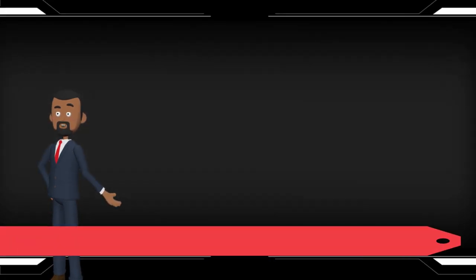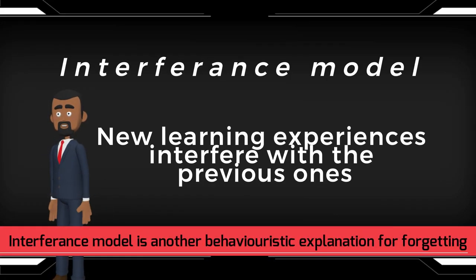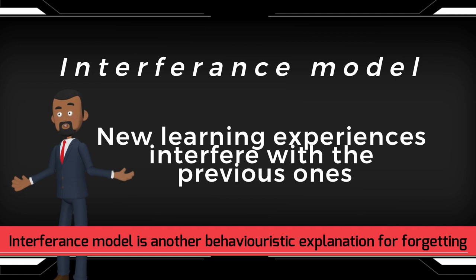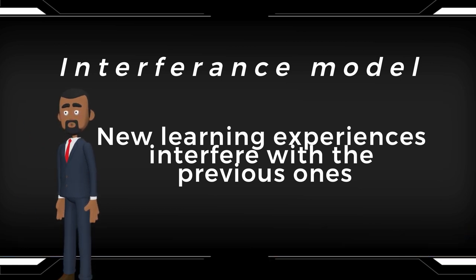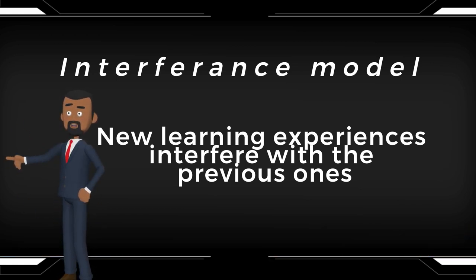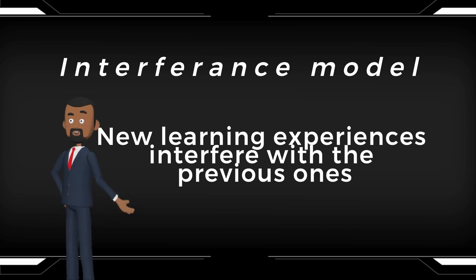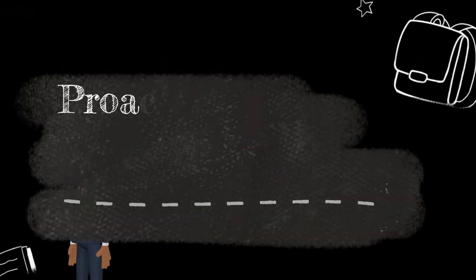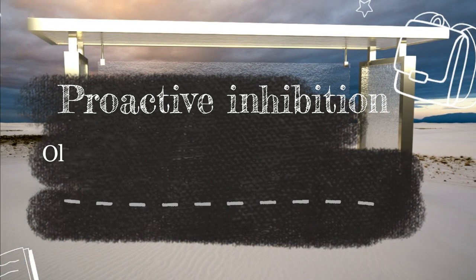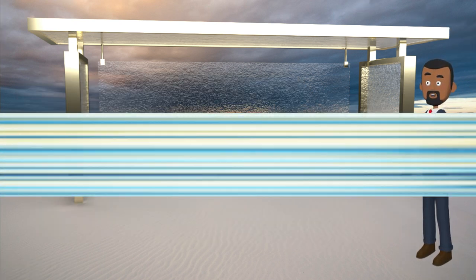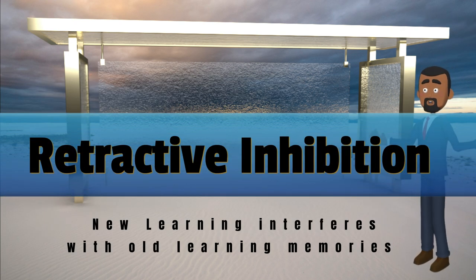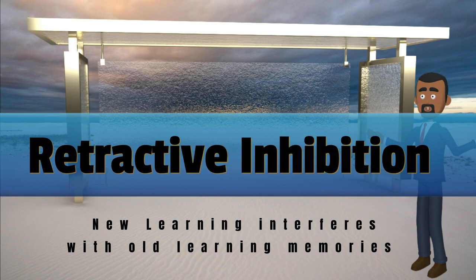The interference model is another behavioristic explanation for forgetting. It suggests that learners forget because new learning experiences interfere with previous ones. Proactive inhibition occurs when old information hinders the memory of new information, while retroactive inhibition happens when new learning impairs the memory of old learning.